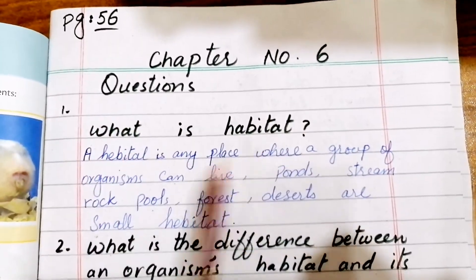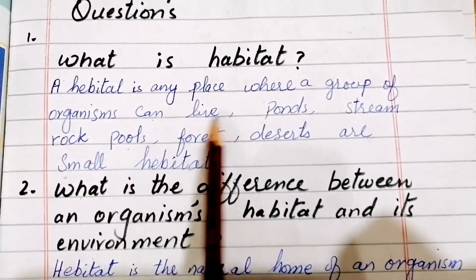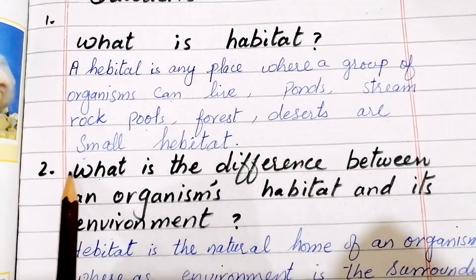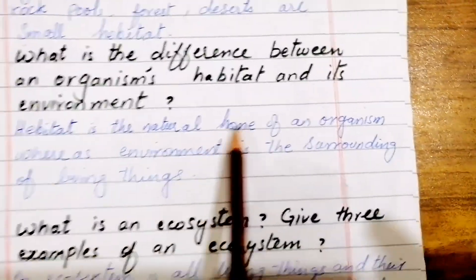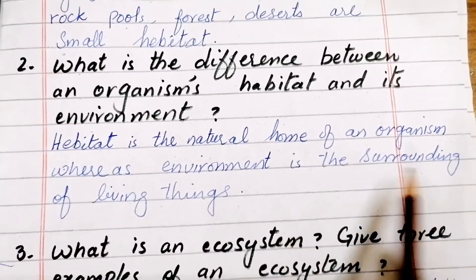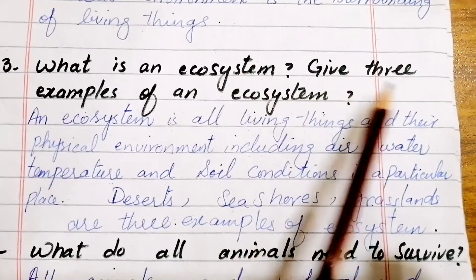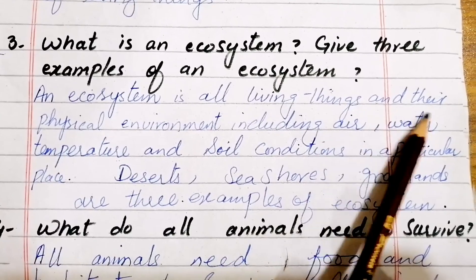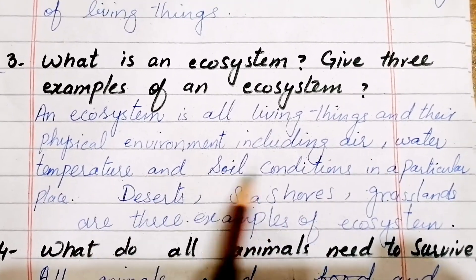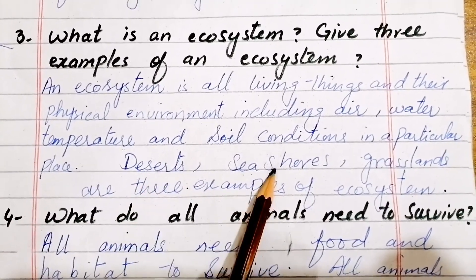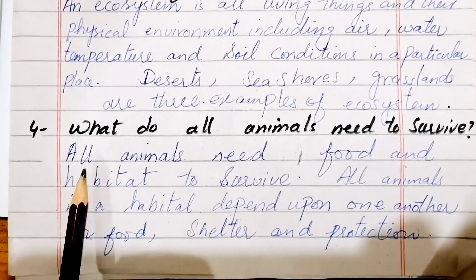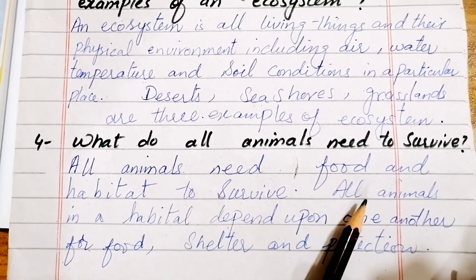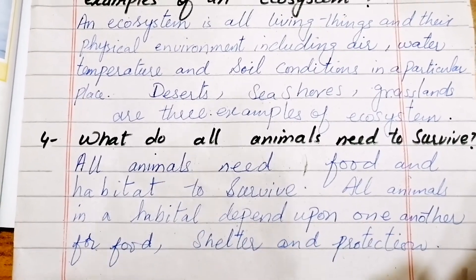Now for some short questions from chapter six. What is a habitat? A habitat is any place where a group of organisms can live — pond, stream, rock pools, forest, deserts, and smaller habitats. What is the difference between an organism's habitat and its environment? A habitat is the natural home of an organism, whereas environment is the surrounding of living things. What is an ecosystem? Give three examples. An ecosystem is all living things and their physical environment — including air, water, temperature, and soil conditions in a particular place. Desert, seashores, and grasslands are three examples. What do all animals need to survive? All animals need food and habitat to survive, and all animals in a habitat depend upon one another for food, shelter, and protection.